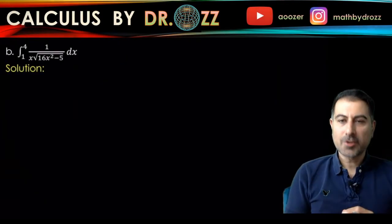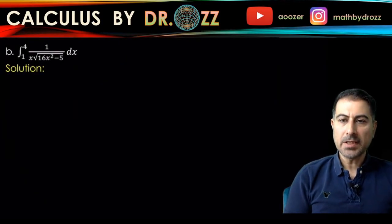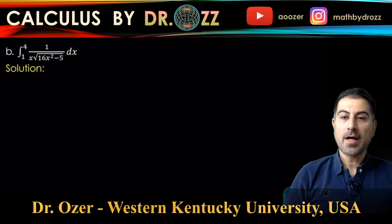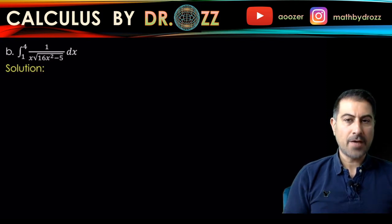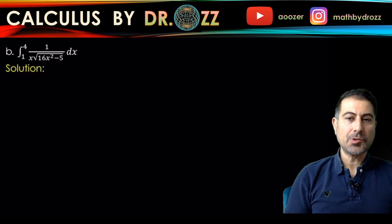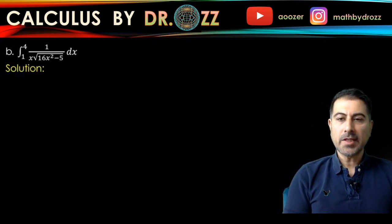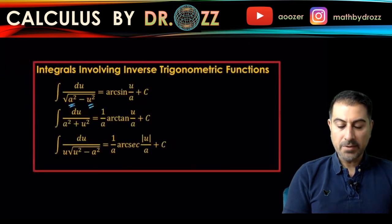All right, so let's check out part b. We have the definite integral from 1 to 4 of 1 over x and radical 16x² minus 5. This looks like one of those integrals in our table that involves integrals having inverse trig functions.